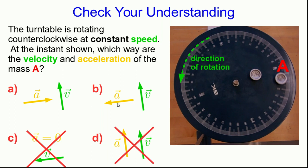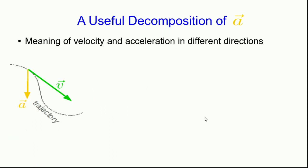We've discussed that the acceleration points in, not out. If it pointed out, then a little while later this object would not be heading to the left — it would be headed right. But its path right now is curving to the left, and so the acceleration has to be roughly that way. We're going to focus on cases where the object is moving at constant speed for now. We'll look at varying speed in circular motion next lecture.